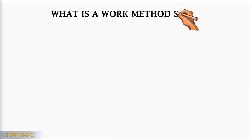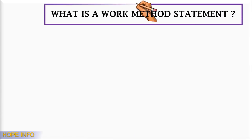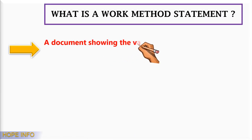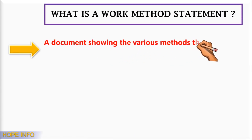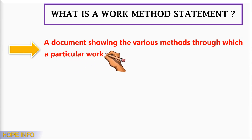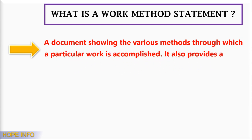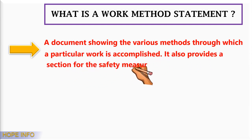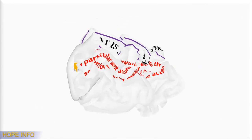What is a work method statement? A work method statement is a document showing the various methods through which a particular work is accomplished. It also provides sections for the safety measures for that activity.